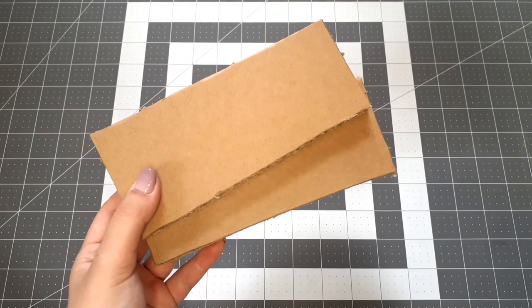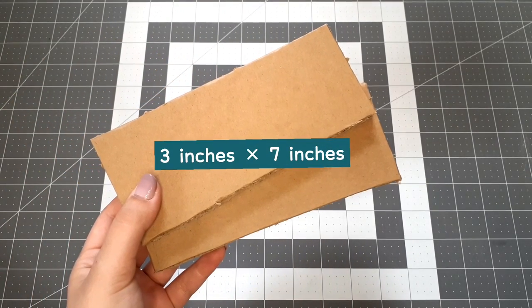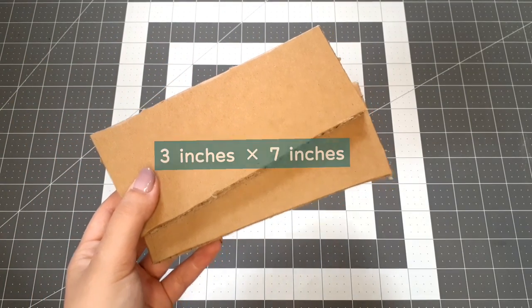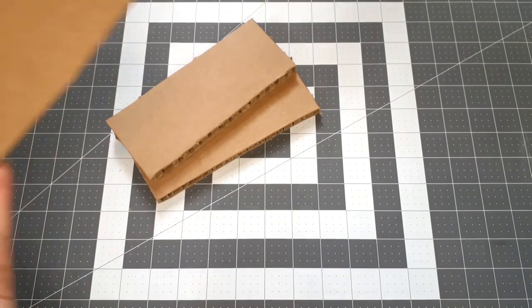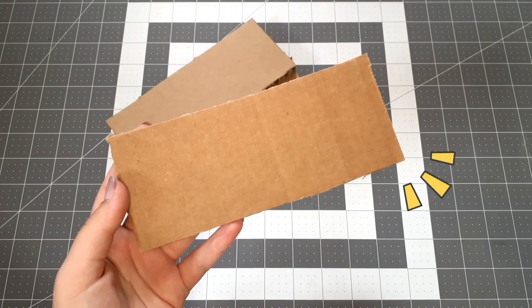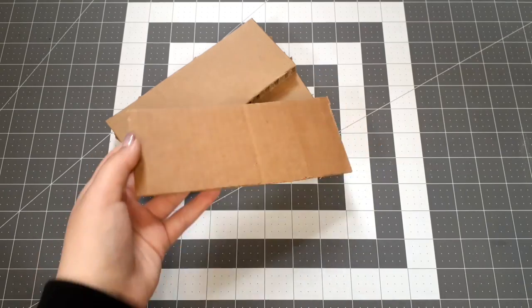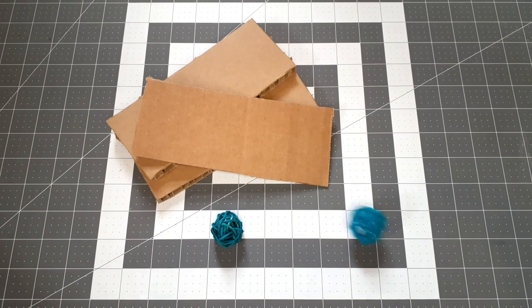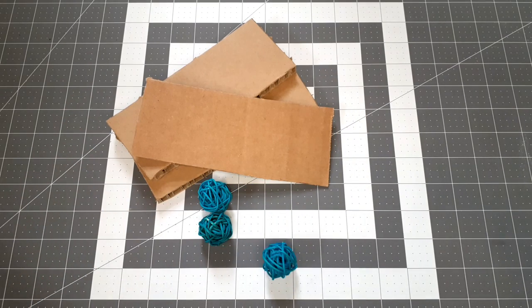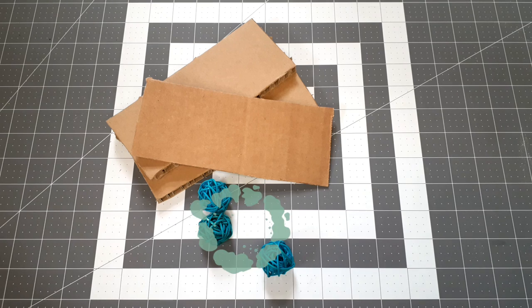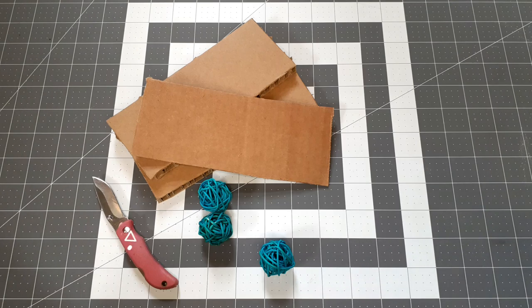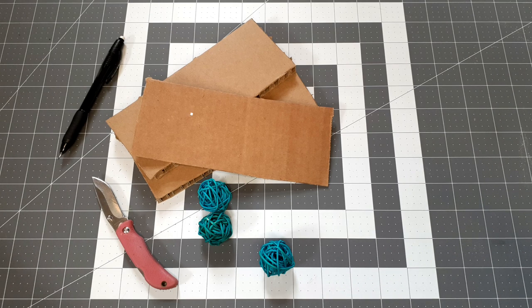For the last toy, you'll need two 3 inch by 7 inch rectangles of this super thick cardboard. You can usually get these out of packages for furniture. A rectangle with the same dimensions that's made out of your thin, standard cardboard. Three wicker balls. These were advertised as bird toys, but they work just fine for hamsters. I'll put a link in the description for these. A knife to cut your cardboard, a pencil, and a hot glue gun.